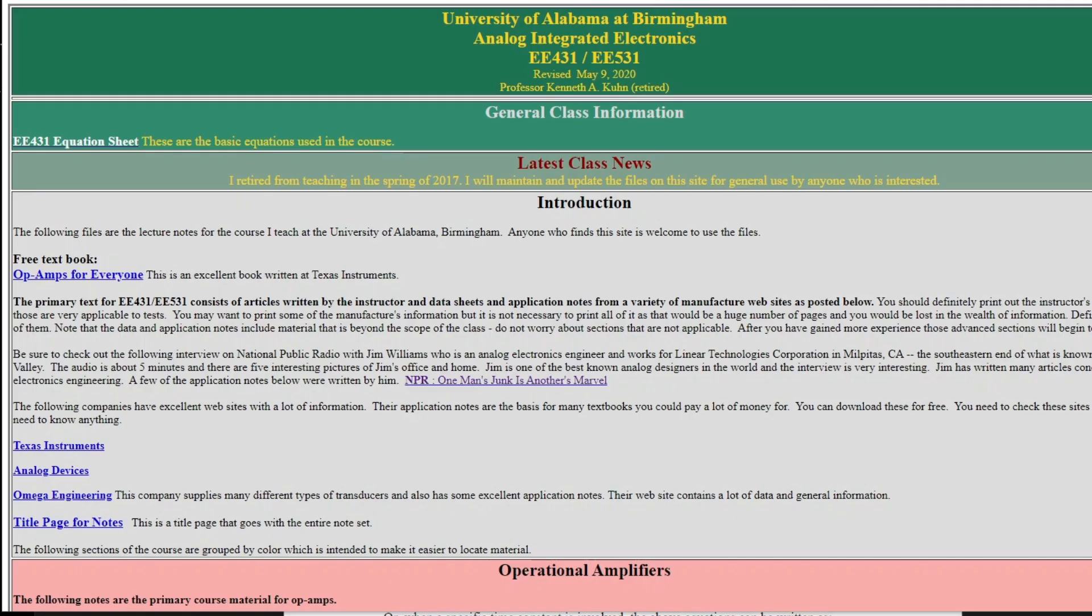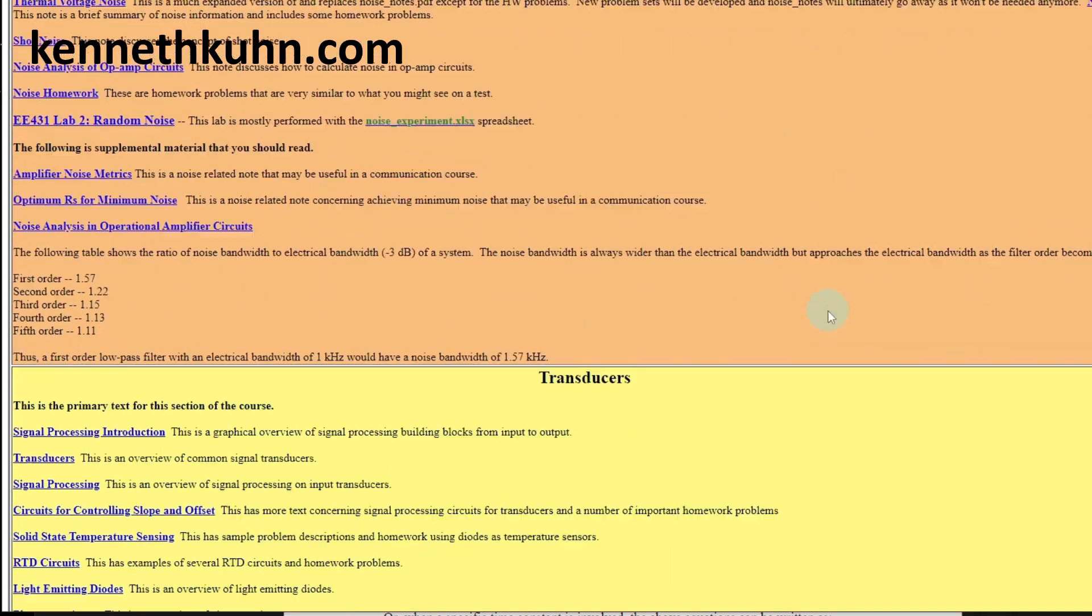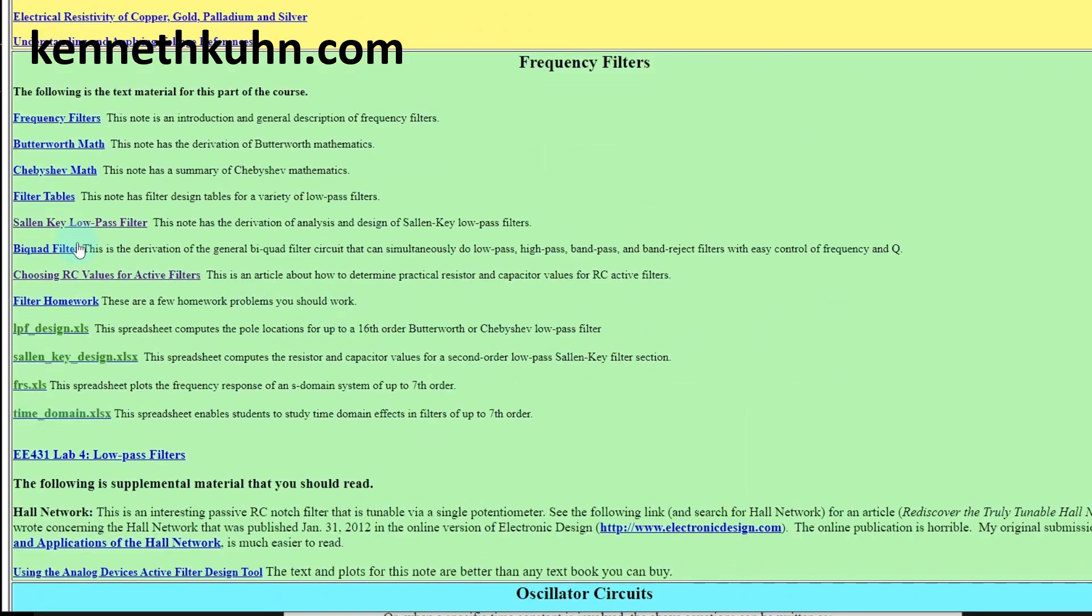While doing some research, I found the website kennethkuhn.com. He's a retired professor from the University of Alabama in Birmingham. He wrote a paper about component selection for the Salen-Key circuit. It's in the frequency filter section of the webpage for EE-431 and EE-531.